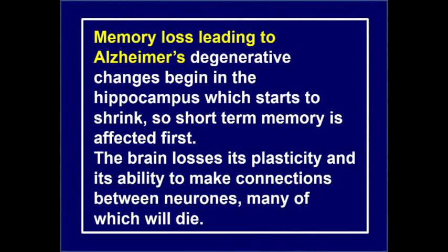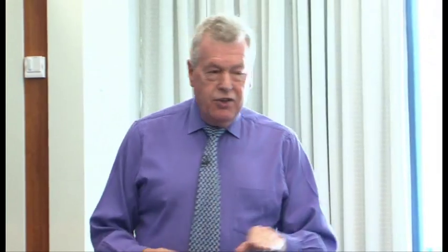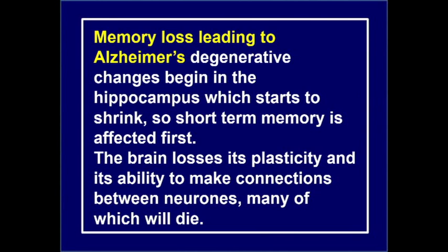Memory loss leading to Alzheimer's degenerative changes begins in the hippocampus, which starts to shrink, so short-term memory is affected first — that's why you go into a room and forget why. But you can remember major events from childhood much more clearly. The brain loses its plasticity — its ability to adapt, find new neuronal circuits, re-enliven old ones, and make connections between neurons — many of which deteriorate and die.